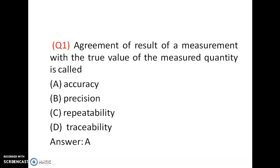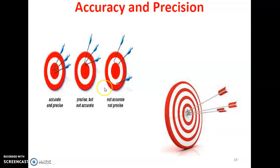Question number 1: Agreement of result of a measurement with the true value of the measured quantity is called? It is accuracy. If the measured value agrees with the true value, then it is called accuracy. So the answer is A. In accuracy, the measured value agrees with the target or true value.